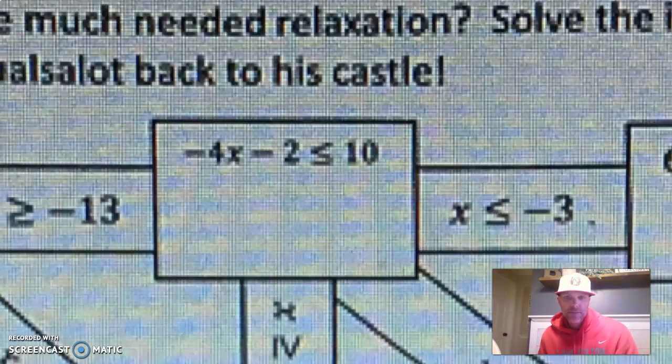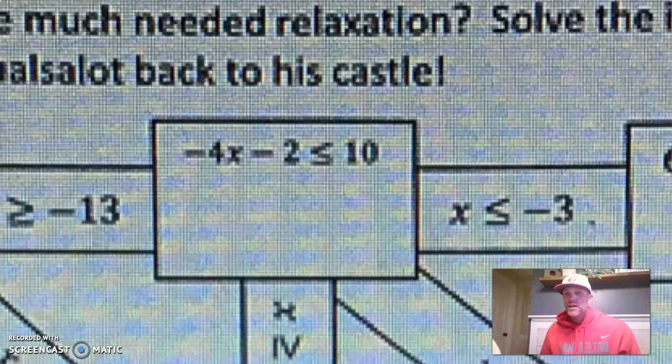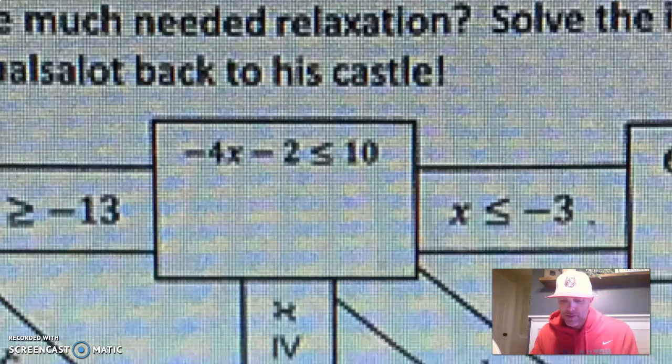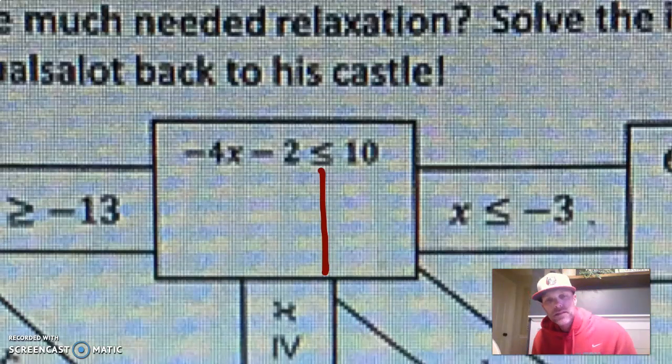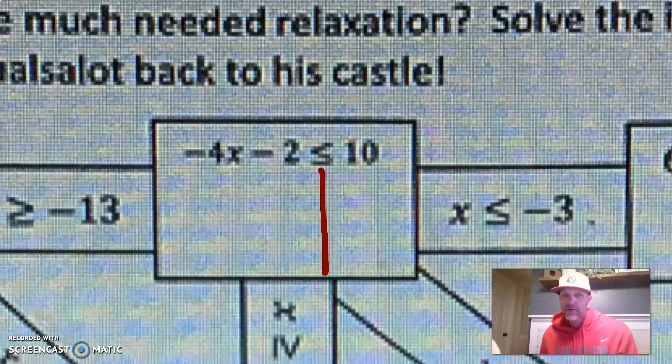All right, so let's look at this right here. It says negative 4x minus 2 is less than or equal to 10, okay? So if we just go through our process, first thing we need to do to get our brain clicking is to draw the line, okay? Just draw that line right down the center of the inequality sign, okay? That tells us we've got a left side and a right side, and that'll get our brain starting to move, right?